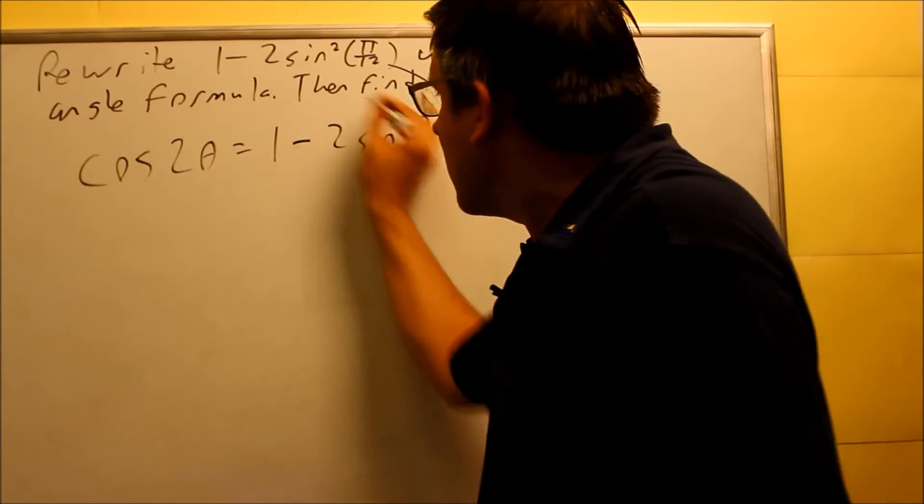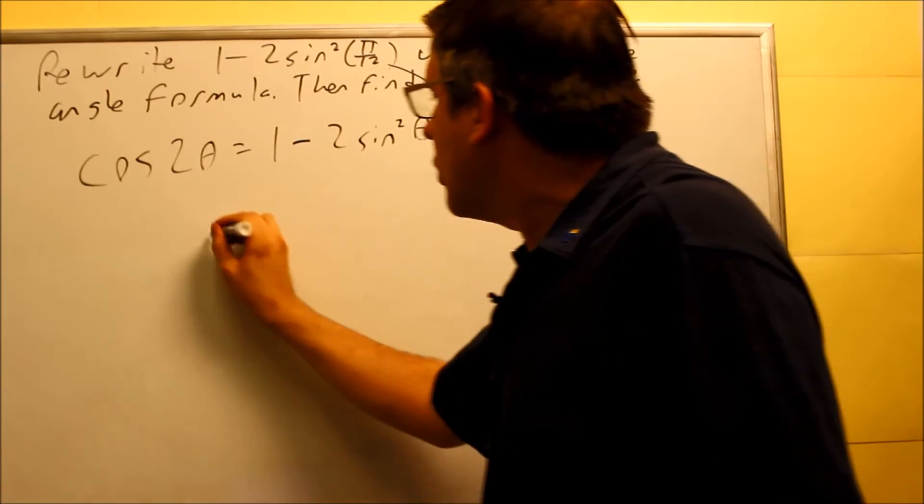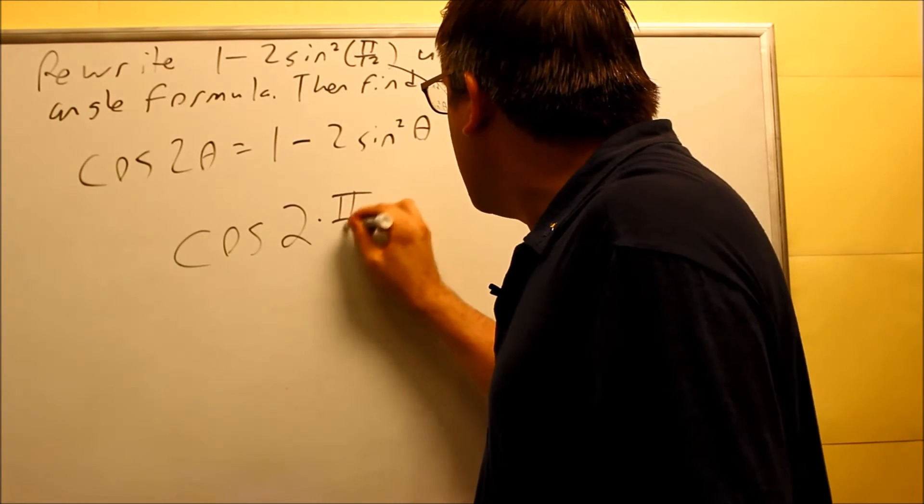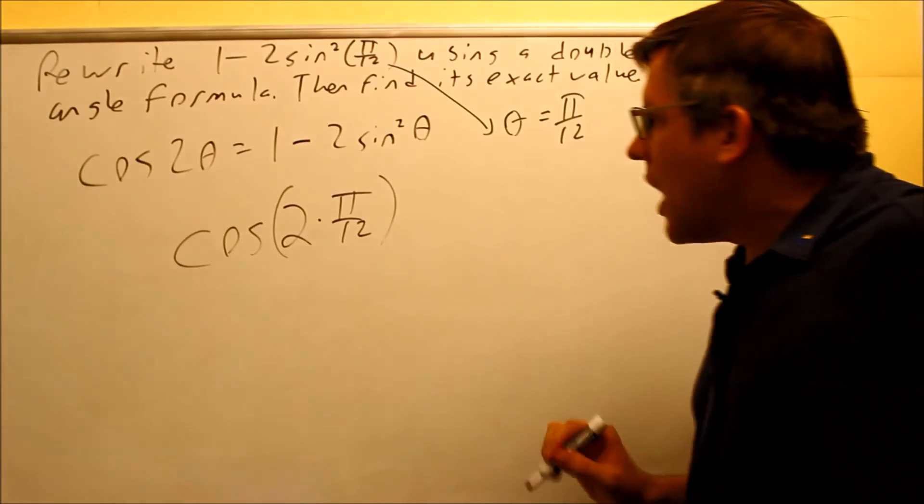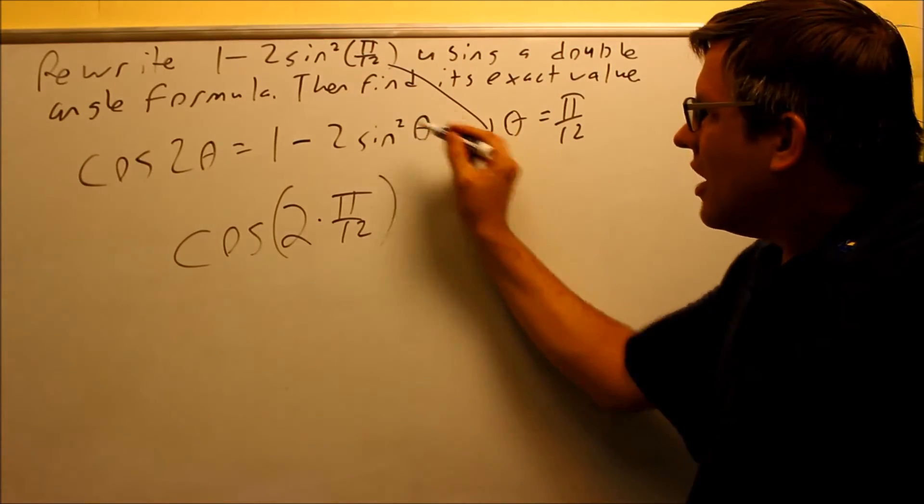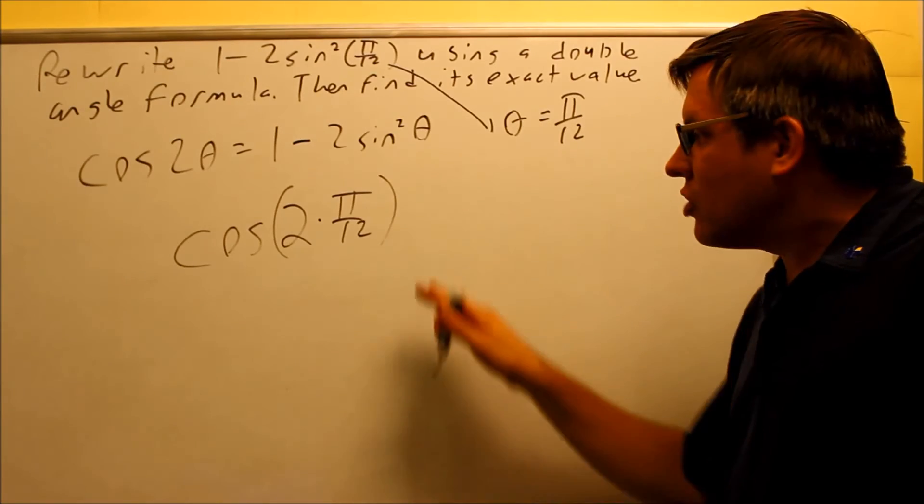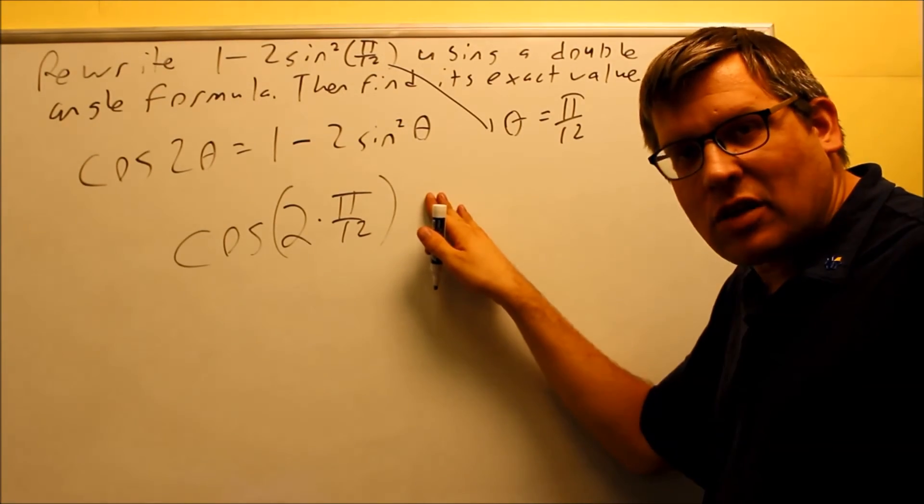So therefore, I can take all this on the right hand side and rewrite it as a single trig function. That's going to be cosine 2 times π over 12. This θ here is the same θ in the first part, so I can go ahead and put that in, and now I've changed the problem into the left hand side.